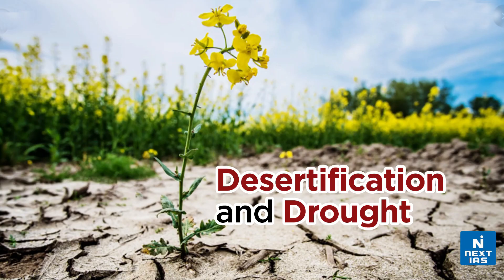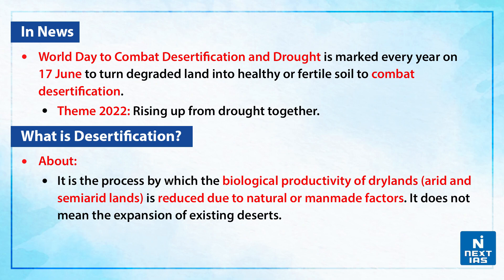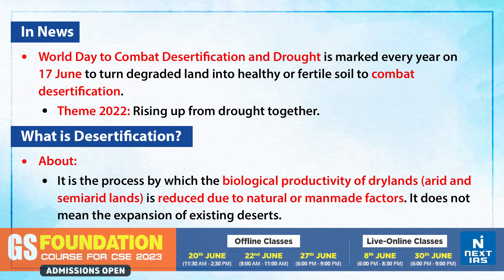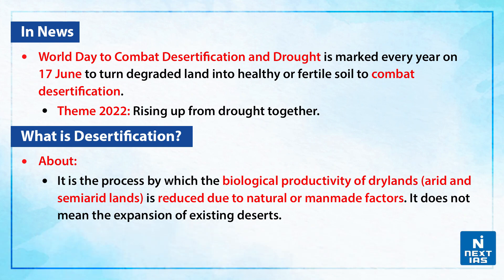Hello everyone, welcome to Topic of the Day. In this edition, we shall be discussing Desertification and Drought. World Day to Combat Desertification and Drought is marked every year on the 17th of June to turn degraded land into healthy or fertile soil to combat desertification. The theme this year was 'Rising Up from Drought Together.'